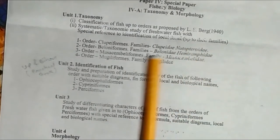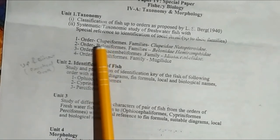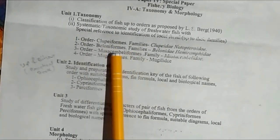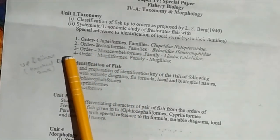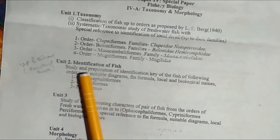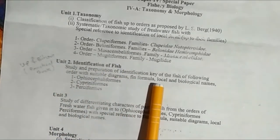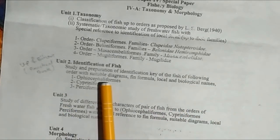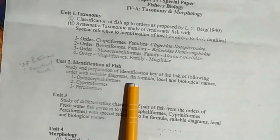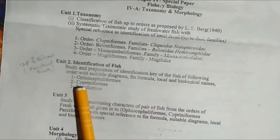We also discuss the following families and orders: Clupeiformes, Beloniformes. Unit Second is identification of fish — the preparation of an identification key of fish of the following orders with suitable diagrams, fin formula, and local and biological names.